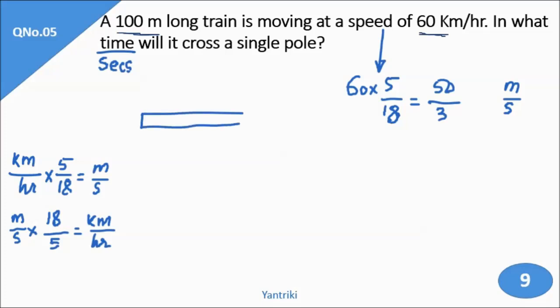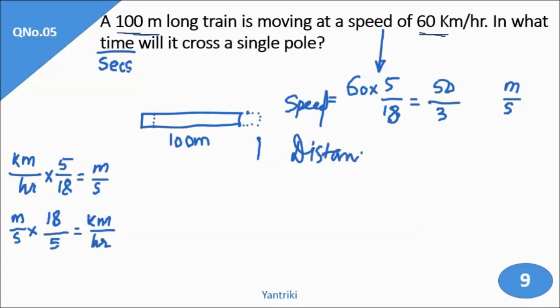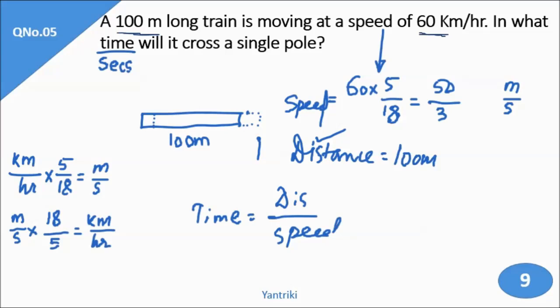Now the concept of this question: suppose this is a train and here is a pole. The length of the train is 100 meters. When the train crosses the pole, the distance travelled equals the length of the train — that is the only logic to use for such questions. So, distance is 100 meters, and for time we do distance divided by speed: 100 divided by 50/3.